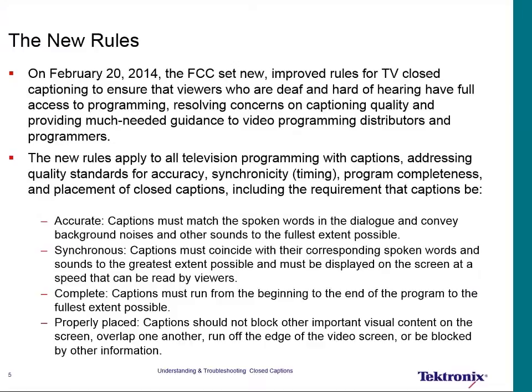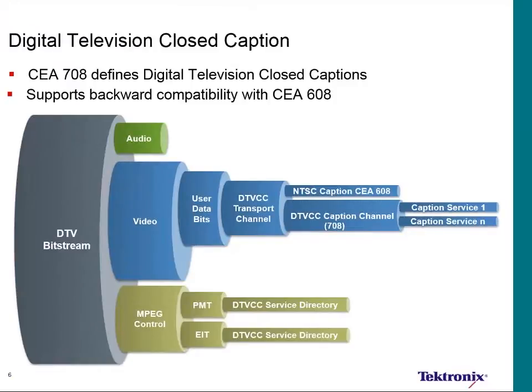Within the DTV closed caption circuit, we have the CEA 708 which defines our caption channel. In the middle we've got a DTV CC transport channel — that's the EIA 708 transport channel. Inside of that is a complete EIA 608 payload and our DTV CC payload. It is mandatory that we carry both the NTSC 608 captions as well as the 708 captions, all carried in that one DTV transport channel.